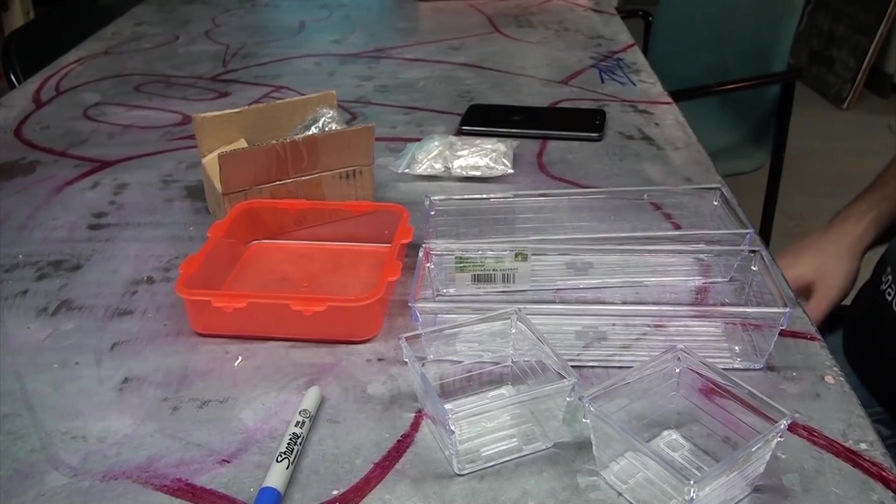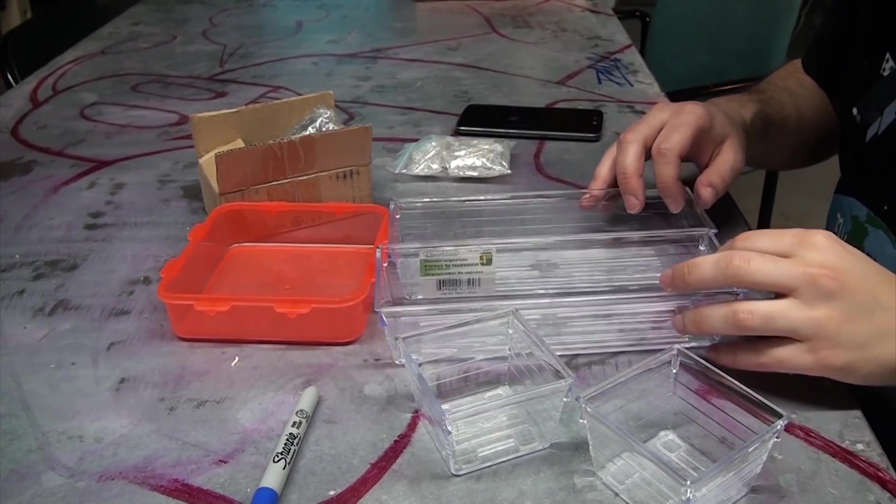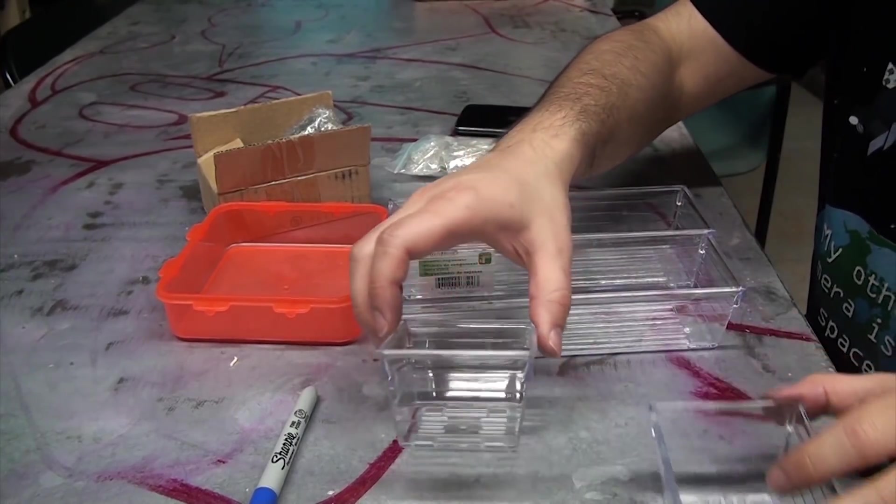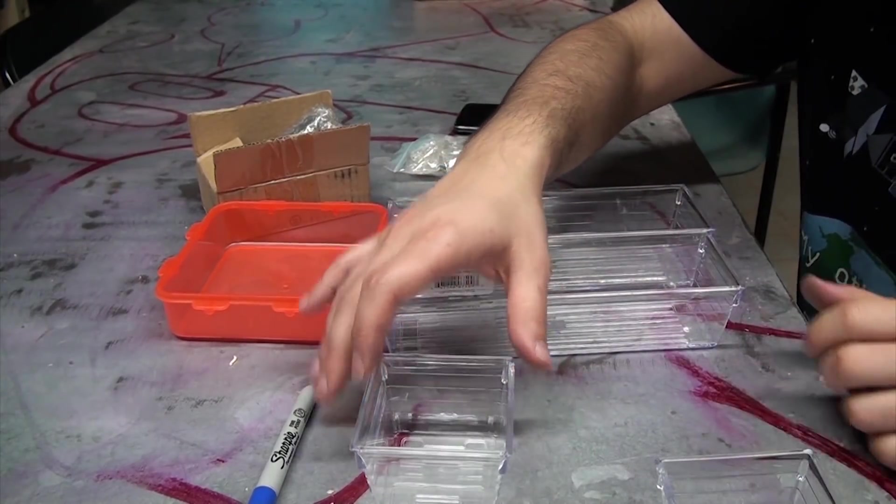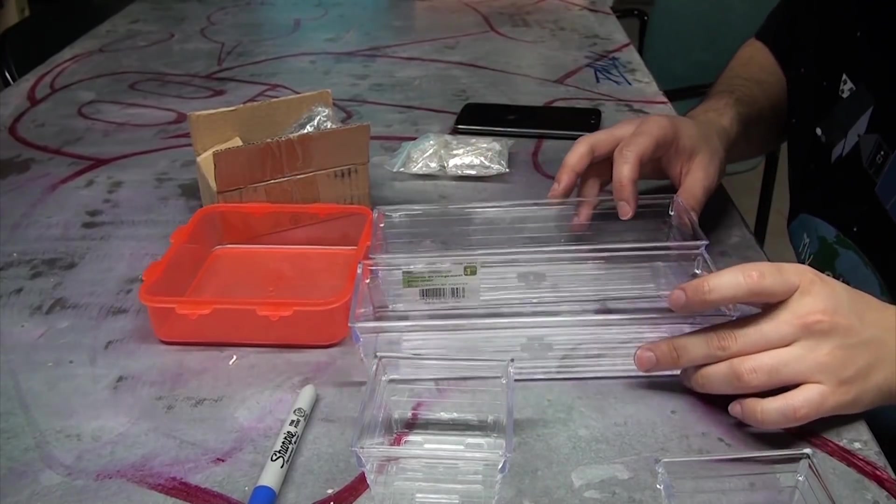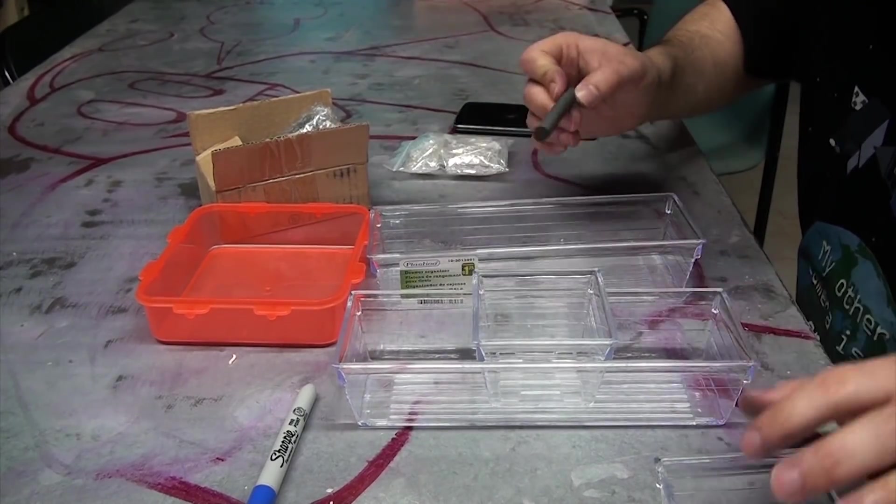I went to the dollar store and picked up a drawer organizer tray and a matching smaller box for casting gels in. And just for fun, I picked up this Tupperware container made of fluorescent orange plastic, which I'll try using in an upcoming build. In total, this costs all of $4.